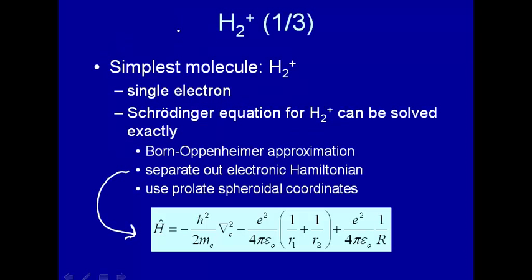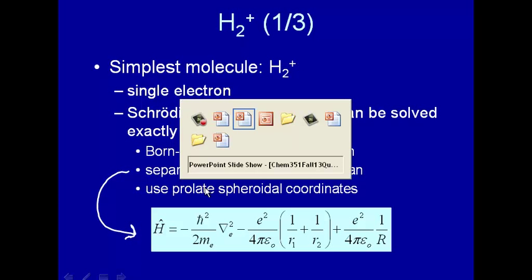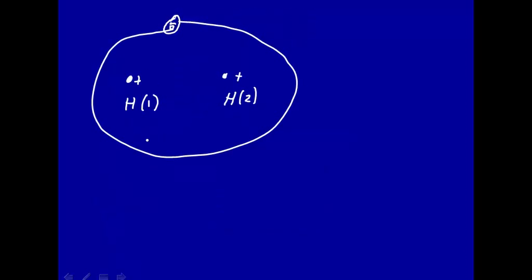In fact, we want to use prolate spheroidal coordinates. What does that mean? A prolate spheroid means if you take an ellipse like this and then rotate it, so this would be coming towards you, this would be going away from you, and you rotate it, you would get a cigar-shaped three-dimensional structure, and that would be a prolate ellipsoid.